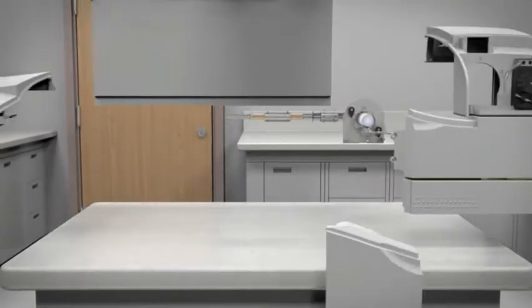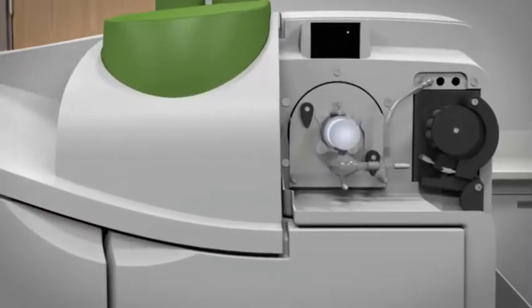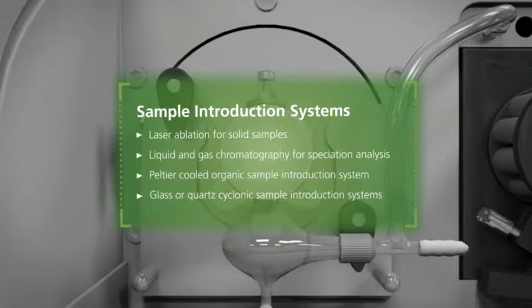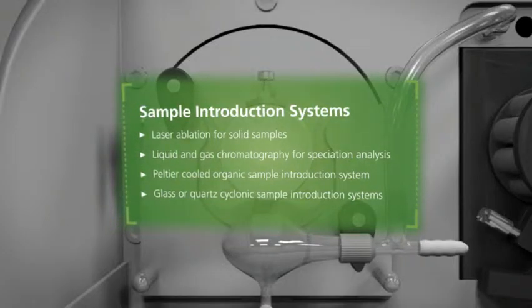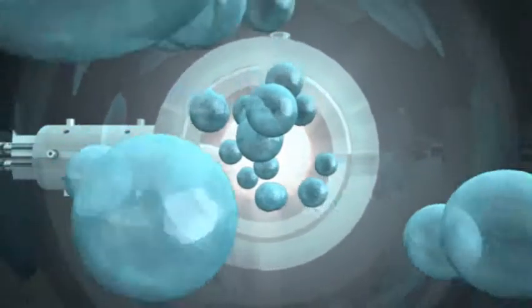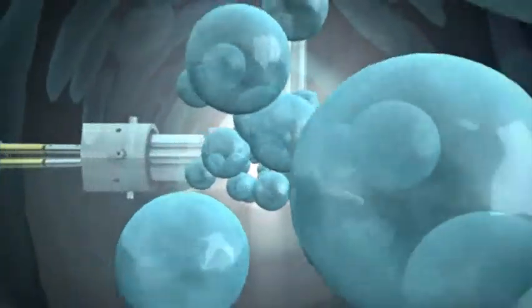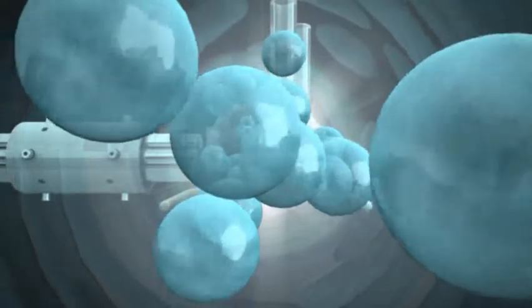One thing you'll notice at first glance is the large, open sample introduction area on Nexion. This design enables the instrument to accept a wide variety of sample introduction systems that can be quickly and easily switched out to suit a particular application. Once your sample is introduced and has been converted into a fine aerosol in the spray chamber, it passes into the torch and through the argon plasma.